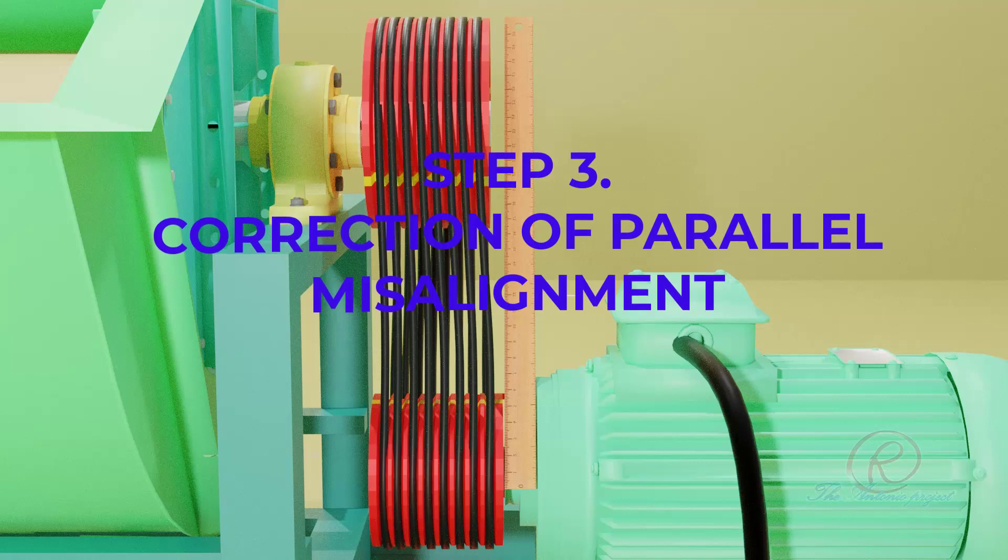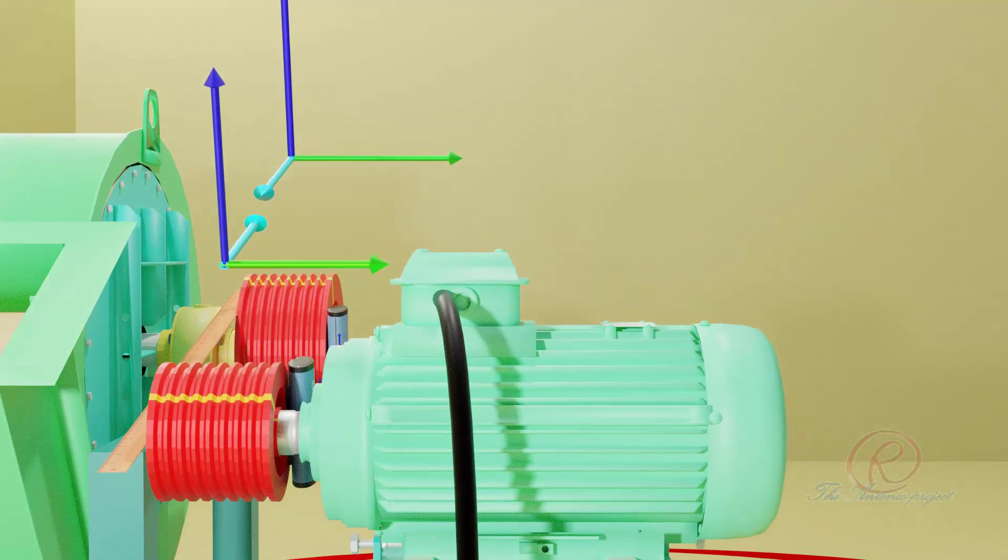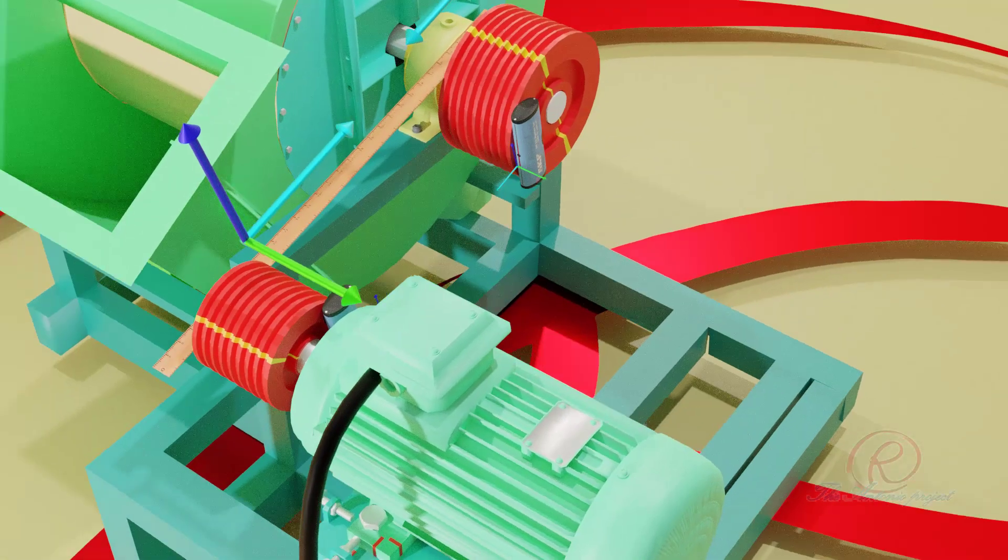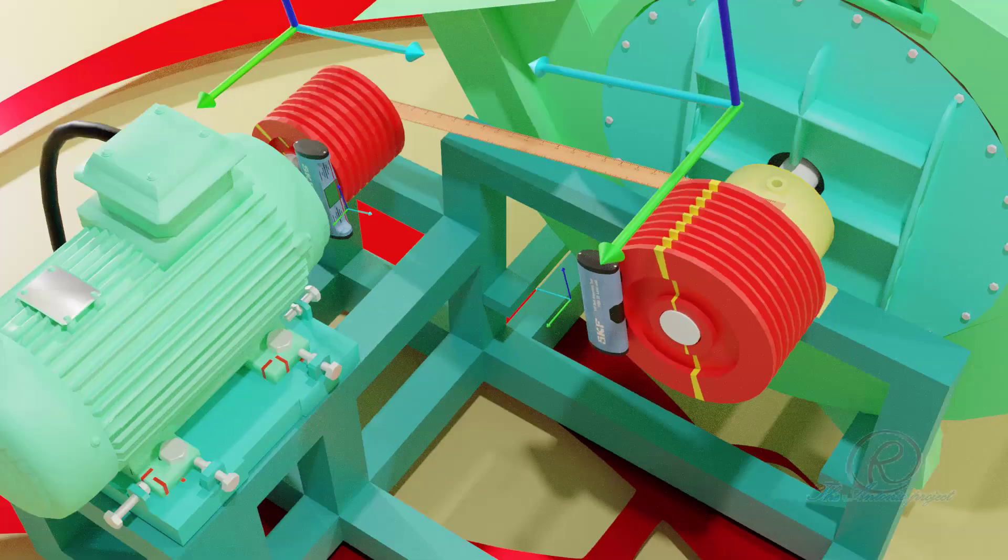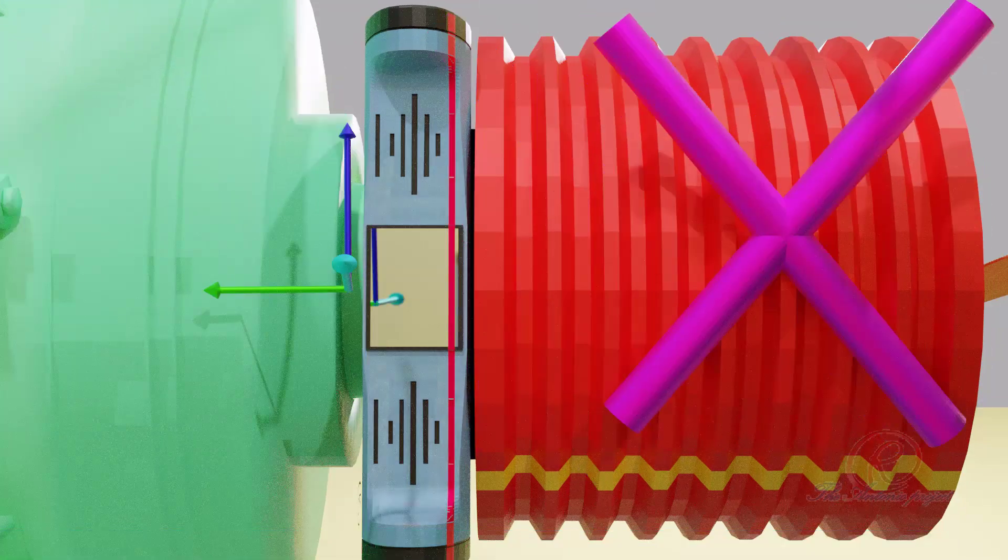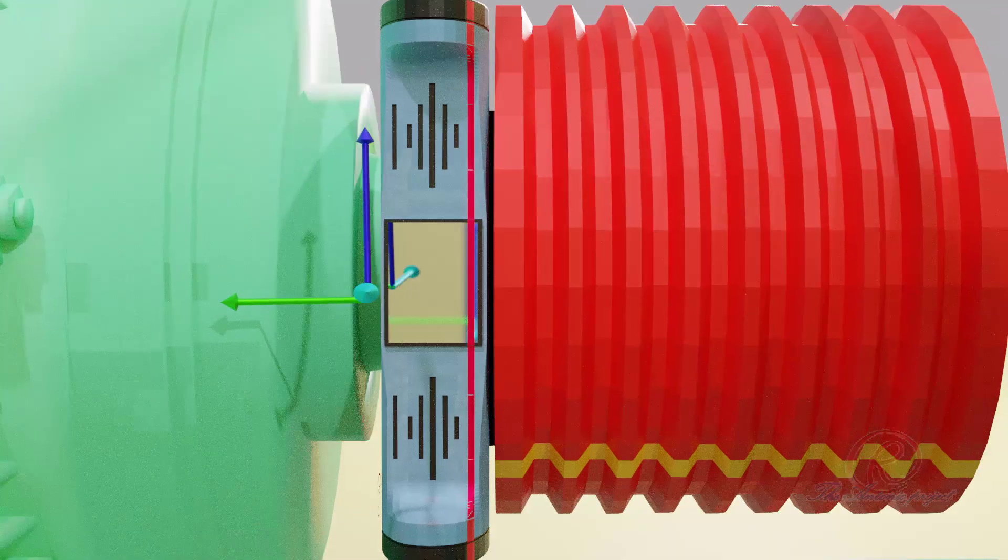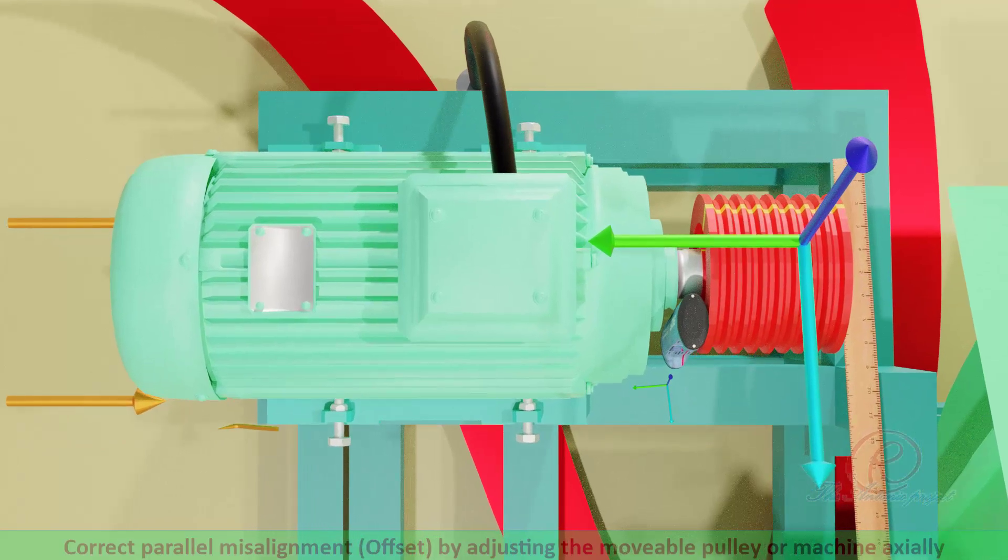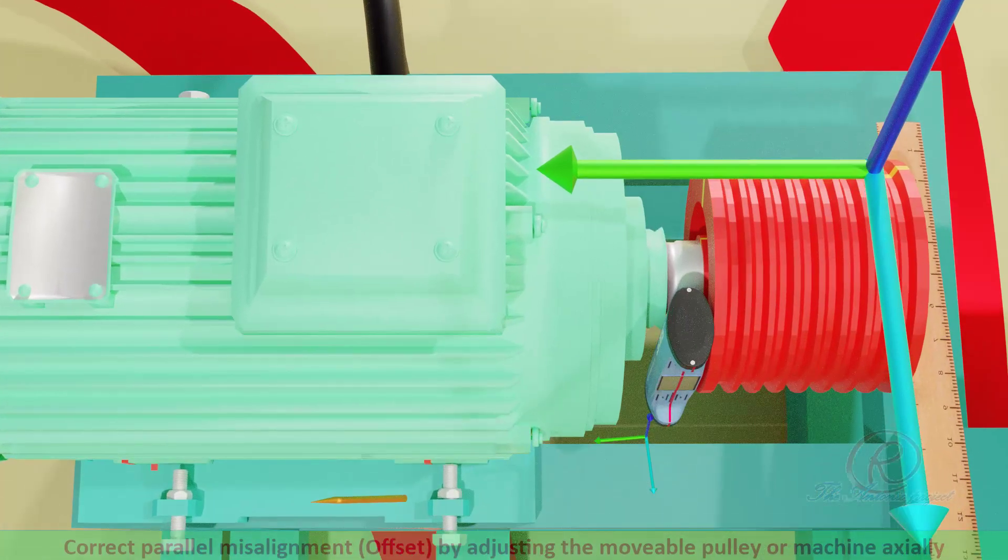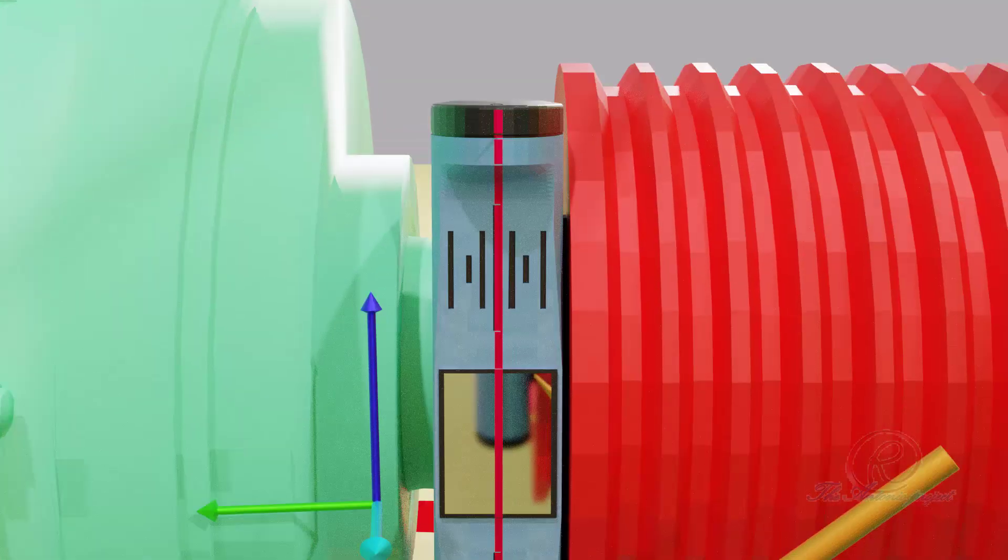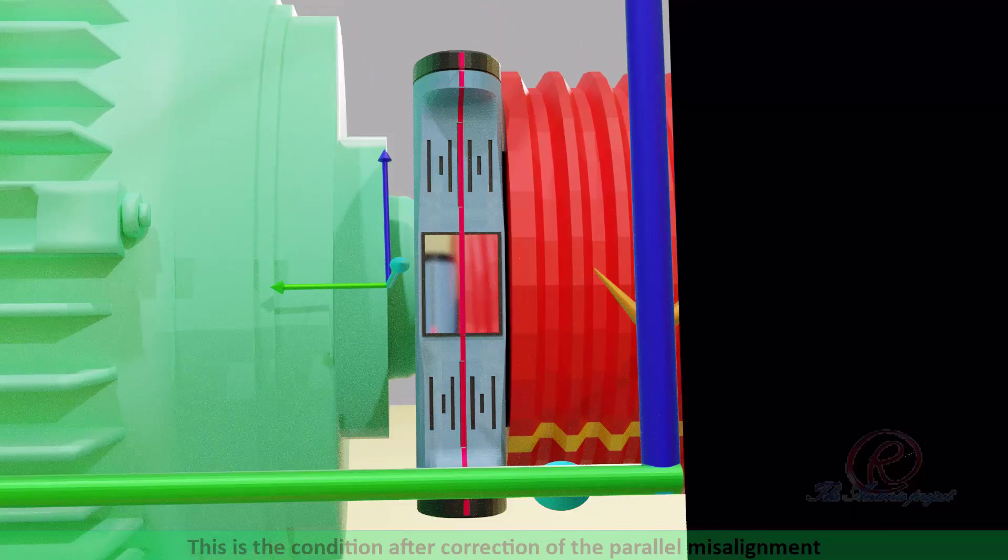Step 3, correction of the parallel misalignment. This is the condition before correction of the parallel misalignment. This is the condition after correction of the parallel misalignment.